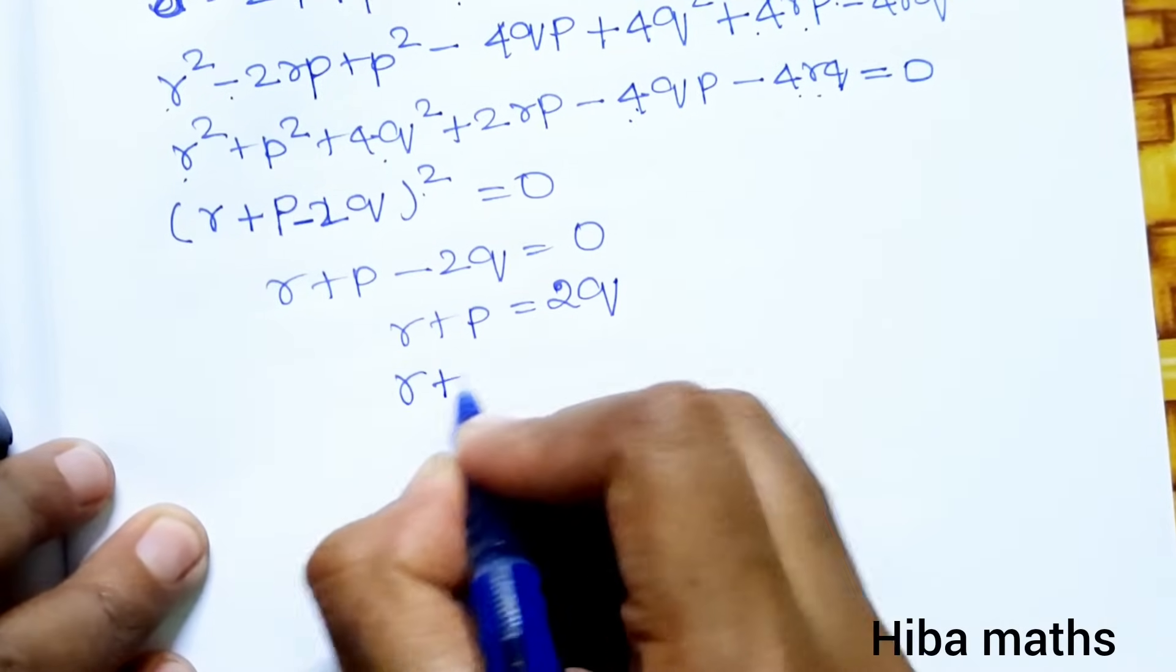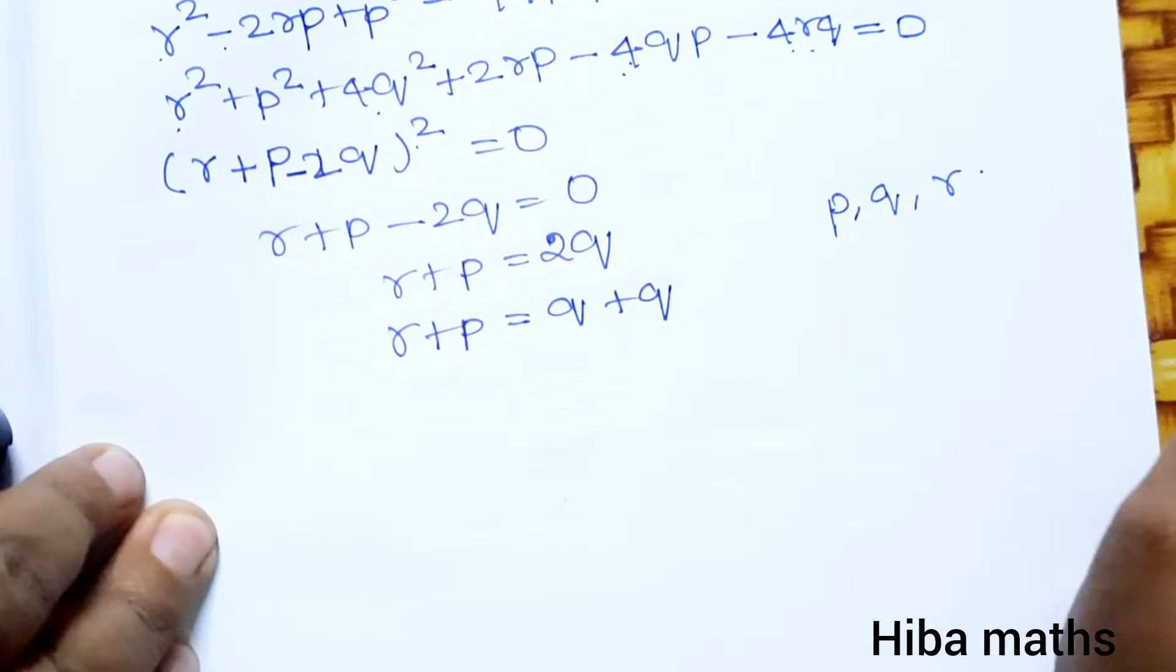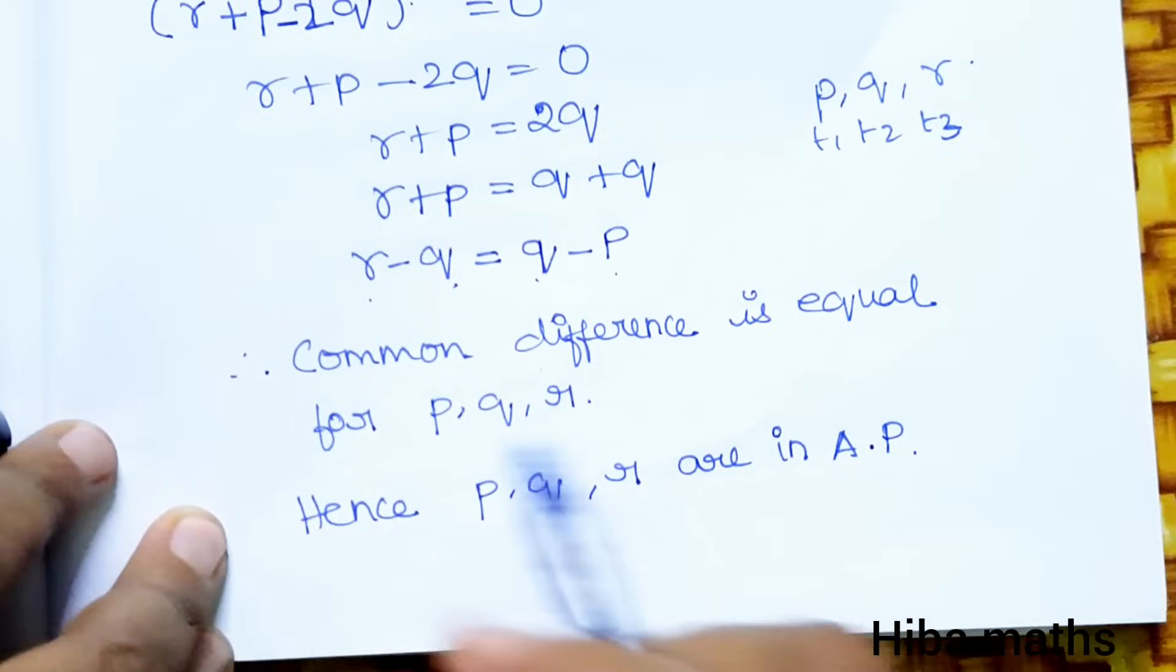The condition we have in the question is that p, q, r are in A.P. If T1, T2, T3 are in A.P., then T2 - T1 = T3 - T2. Here q - p = r - q, which means the common difference is equal. These three terms are in A.P. The common difference is equal for p, q, r. Hence p, q, r are in A.P. Thank you so much for watching.